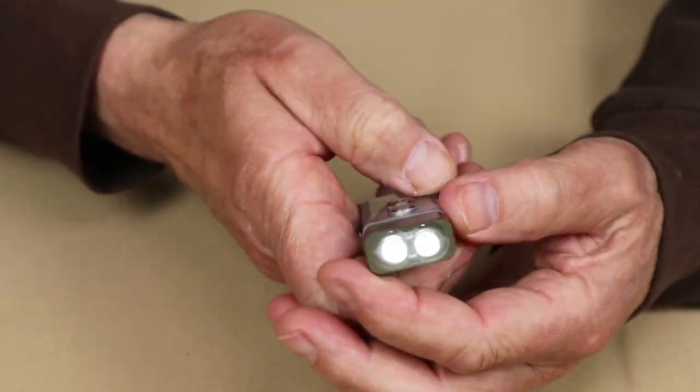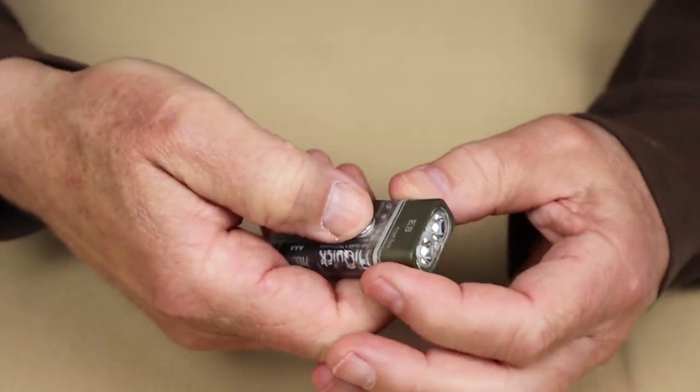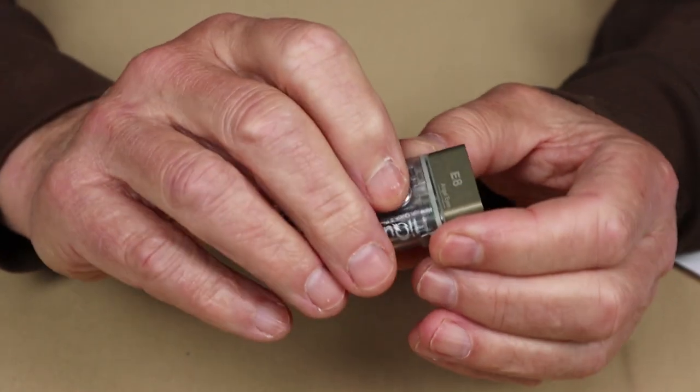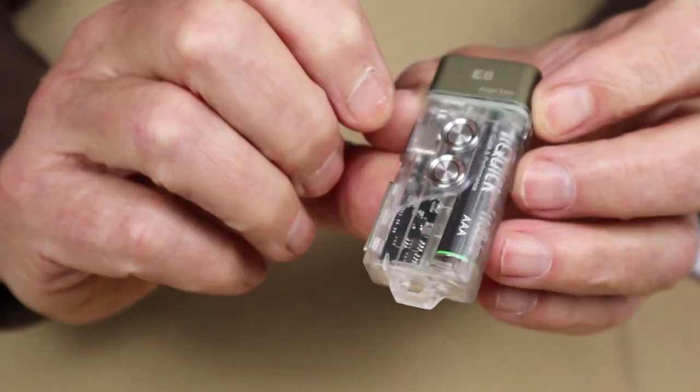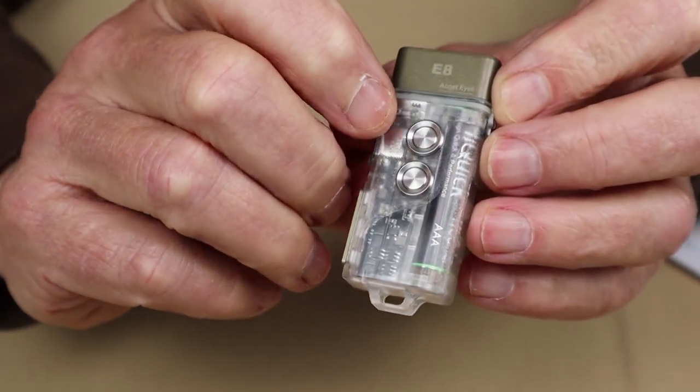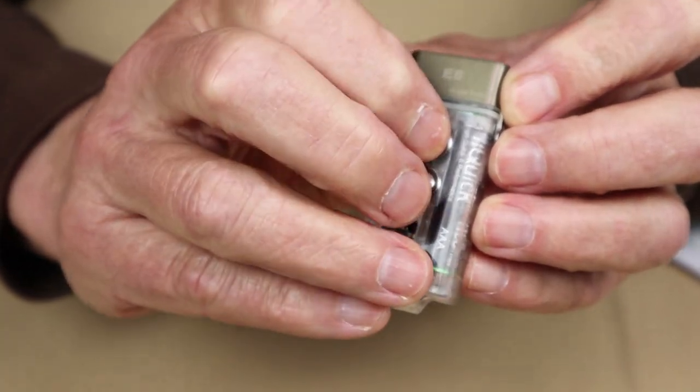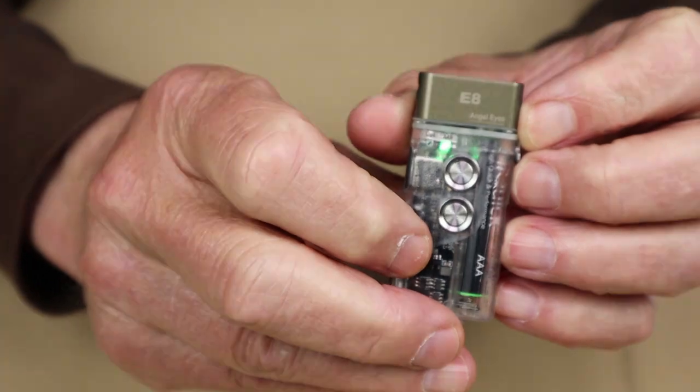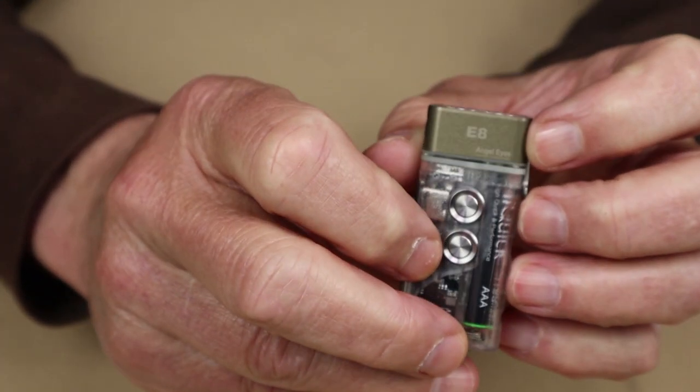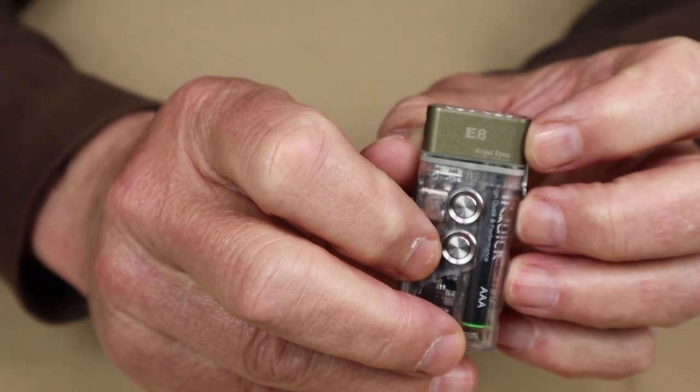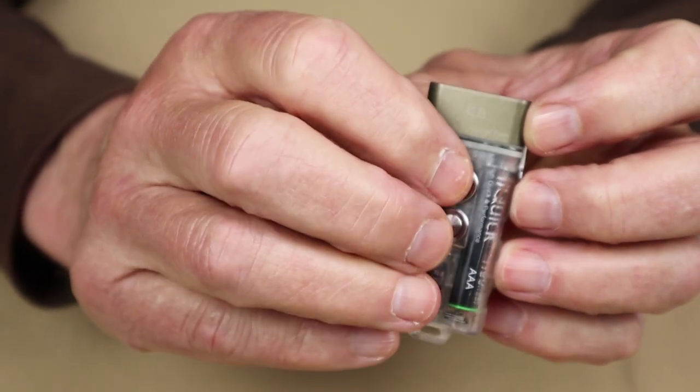To do that, you start with a short press of the light to turn on your moonlight, and then triple press the button. Now I want to make sure you can see this because right up here are two small LEDs, a green one and a blue one. So if I triple press now, you should see that the green one is on. That's indicating to me that the light is running off of the AAA battery.